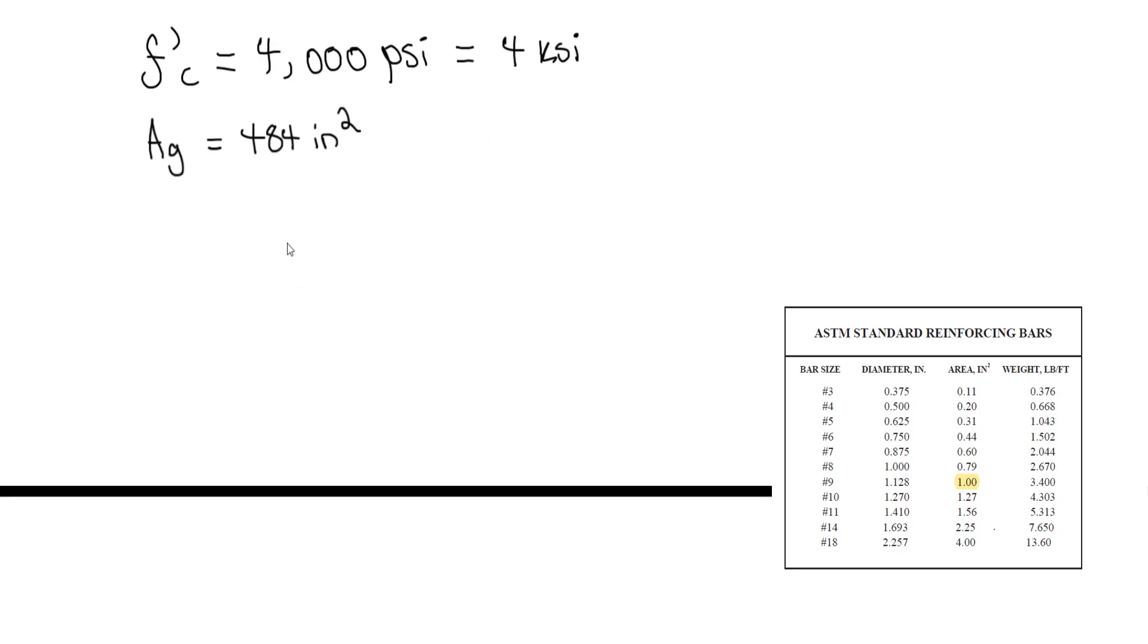So the total area for the steel bars, A sub st, is 8 bars times 1 inch squared, which equals 8 inches squared.